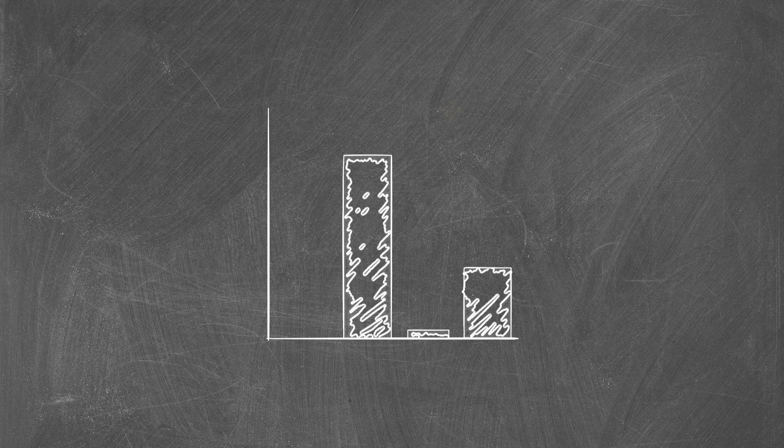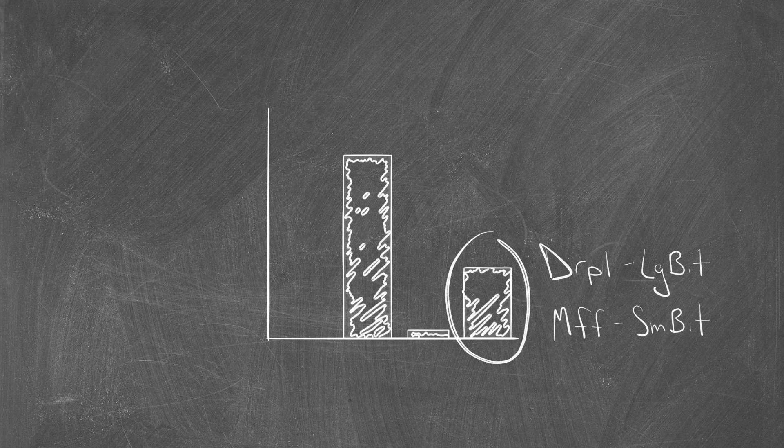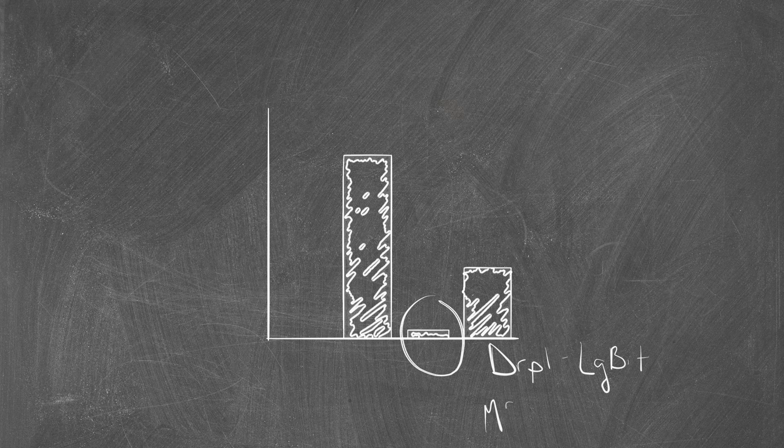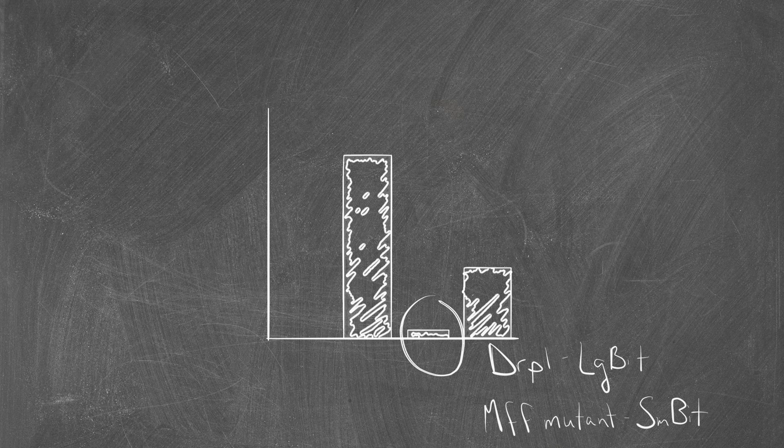DRP1 large bit specifically interacted with small bit MFF, generating a luminescence signal. A point mutation in MFF known to interfere with DRP1 binding reduced luciferase activity by approximately 90%.